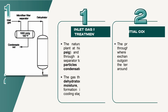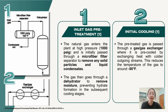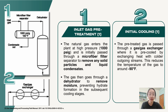The cryogenic process starts with inlet gas pretreatment. The natural gas enters the plant at high pressure, 1000 PSIG, and is initially passed through a microfiber filter separator to remove any solid particles and liquid condensates. The gas then goes through a dehydrator to remove moisture,